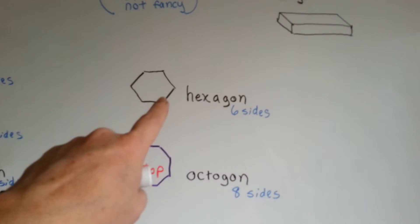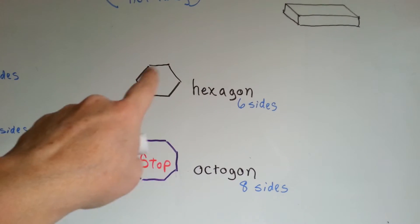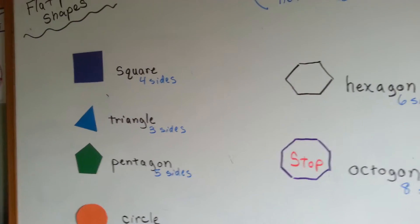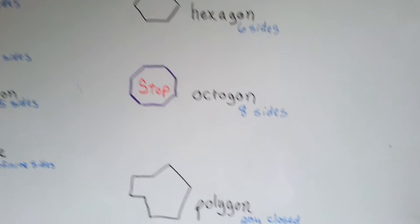A hexagon is a polygon. It's got straight line segments for its sides and it's closed. So is a pentagon, a triangle, and a square. They all have closed sides.